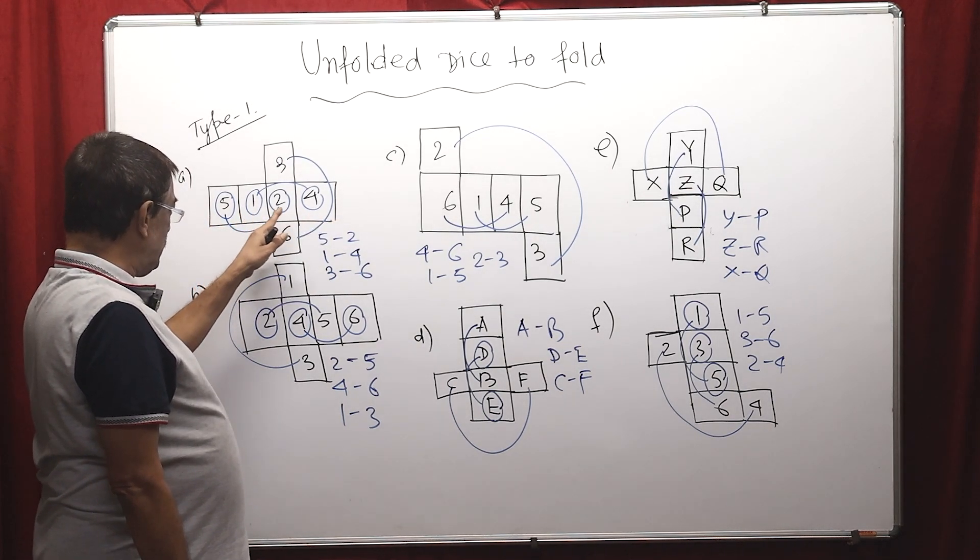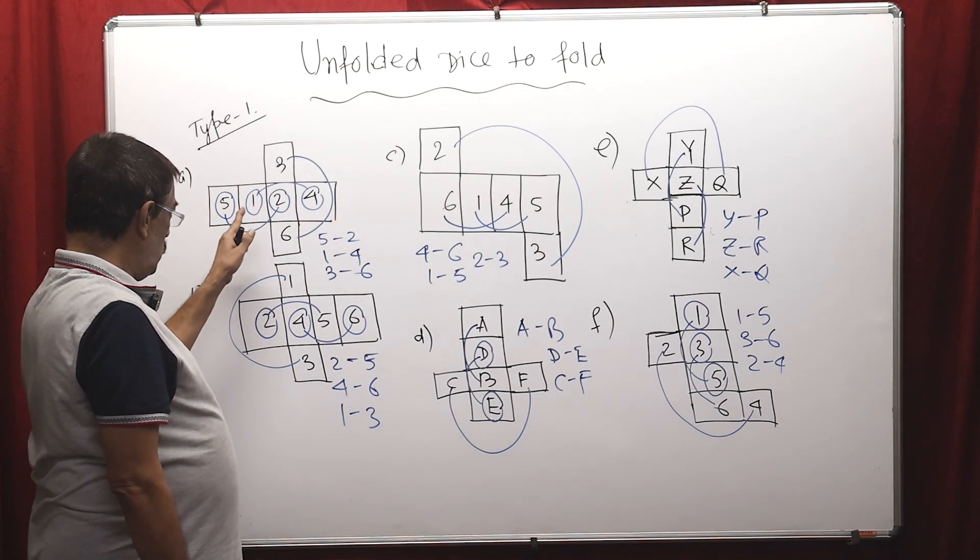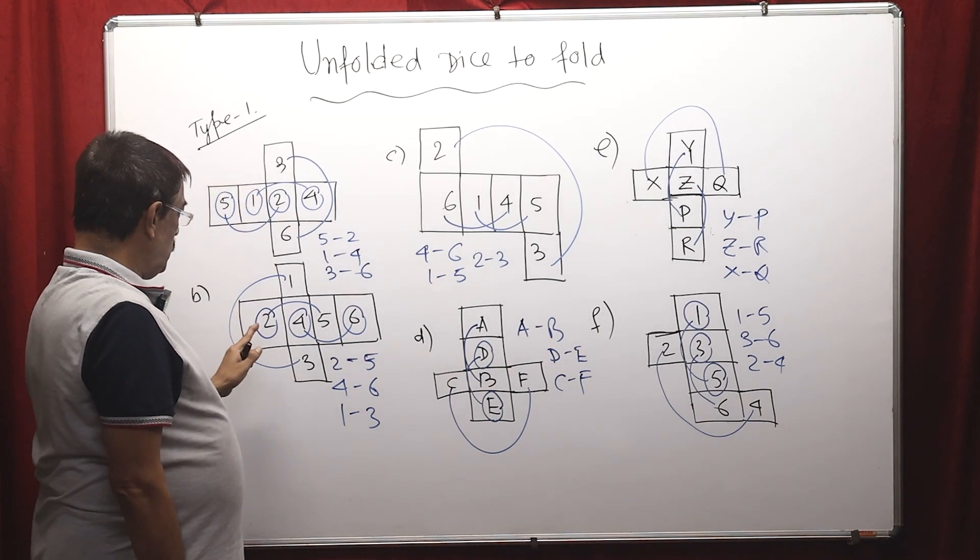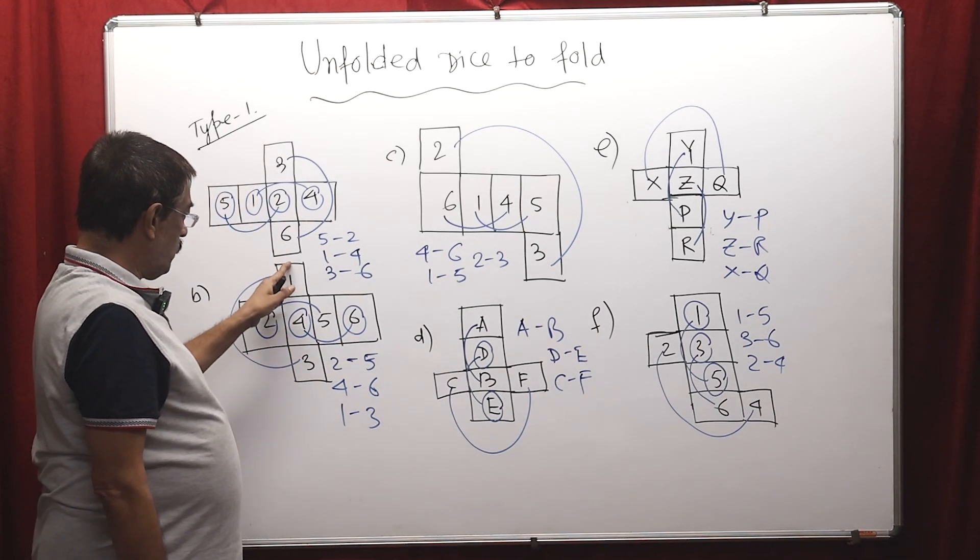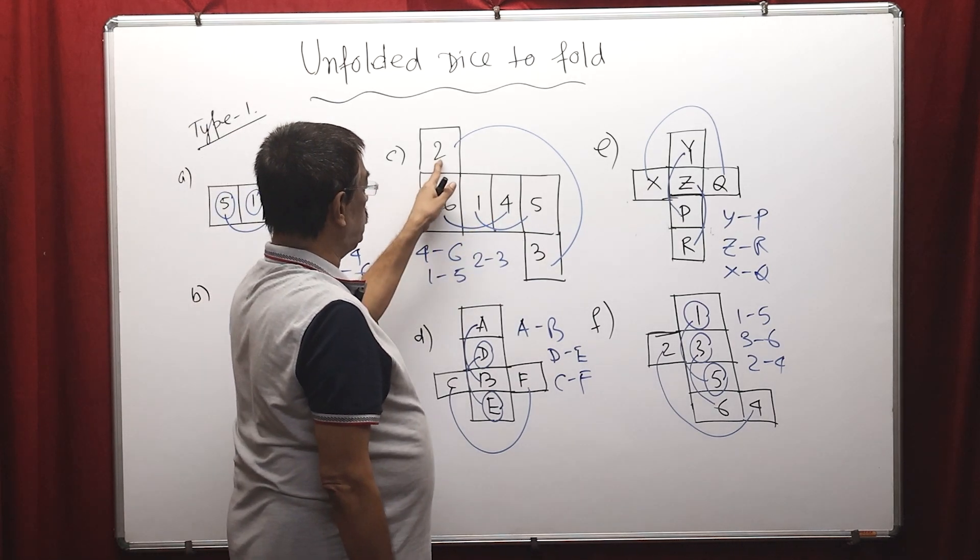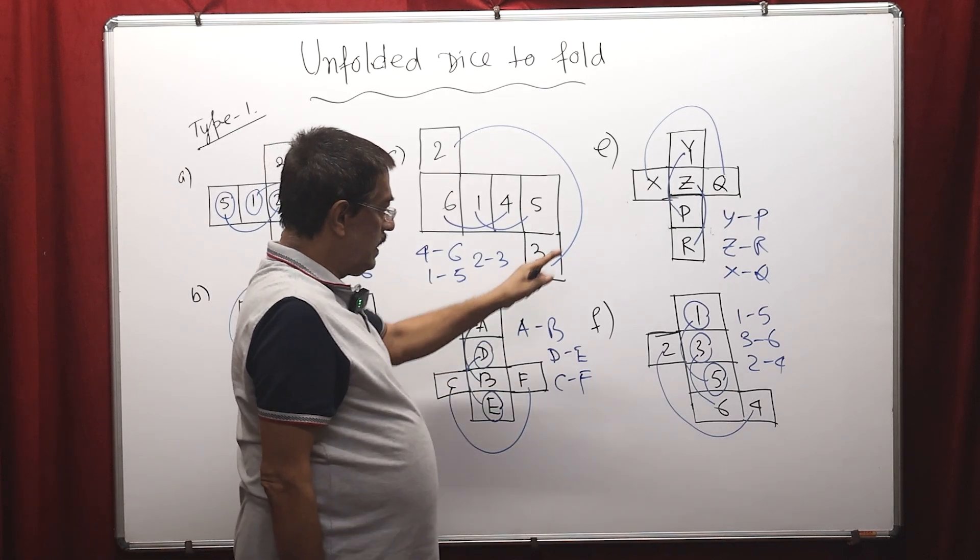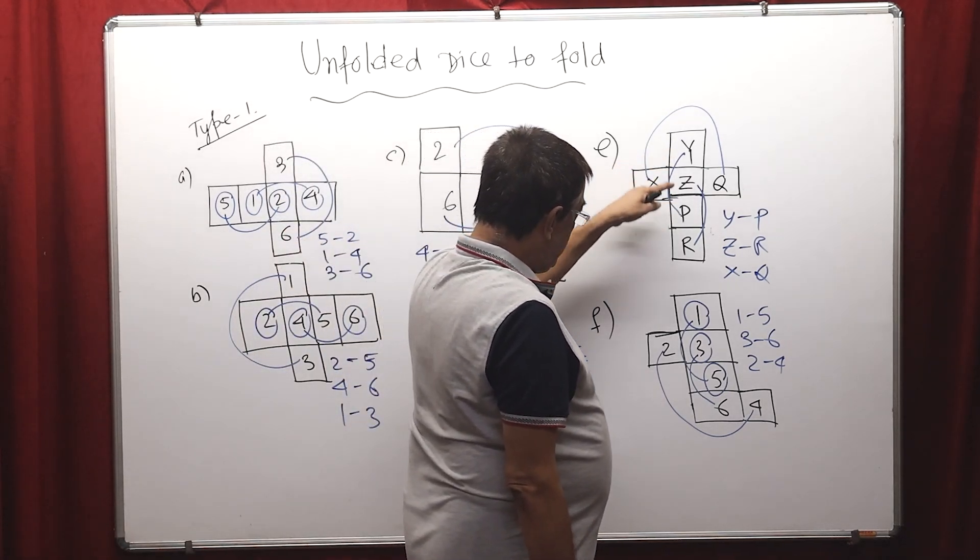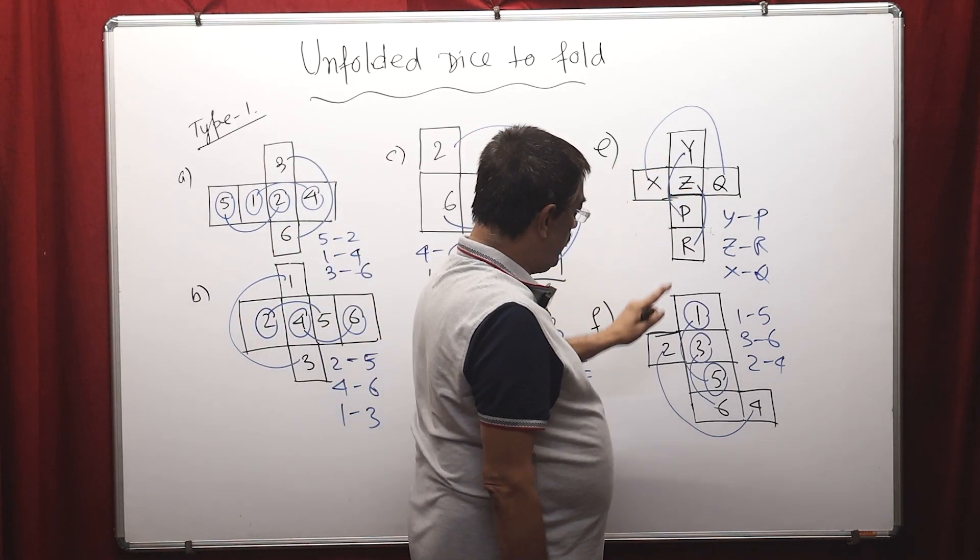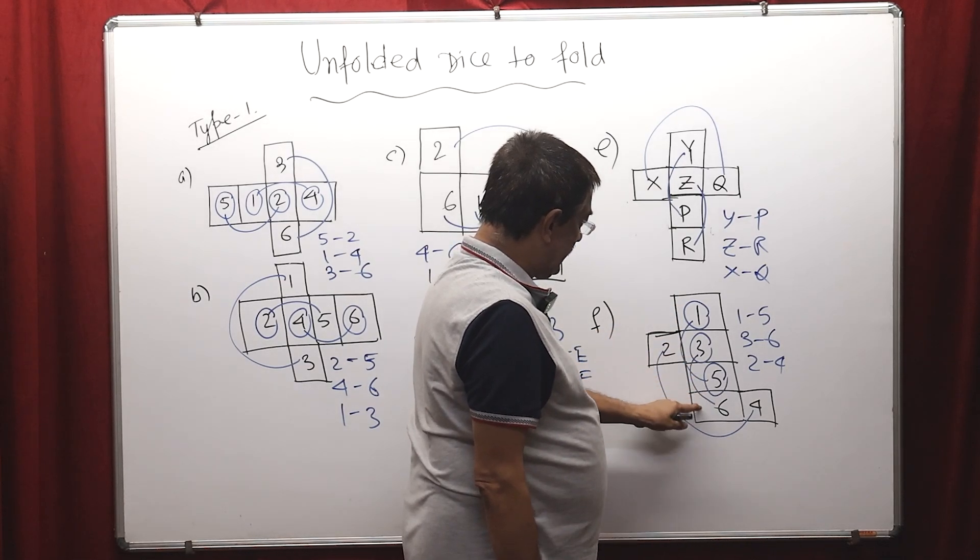Start one box, skip one box, then one box. So: 5, 2, 1, 4, 3, 6. 2, 5, 4, 6, 1, 3. 6, 4, 1, 5, 2, 3. A, B, D, E, C, F. Similarly Y, P, Z, R, and X, Q. 1, 5, 3, 6, and 2, 4.